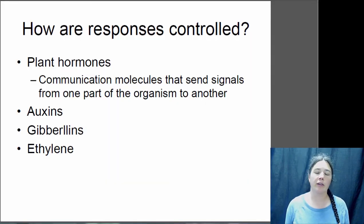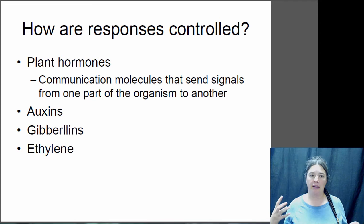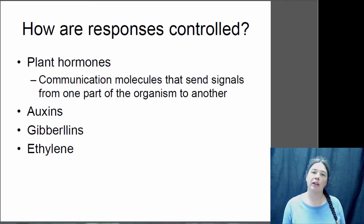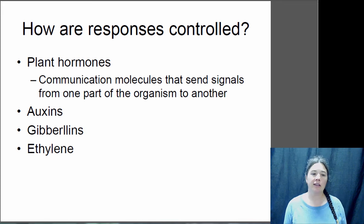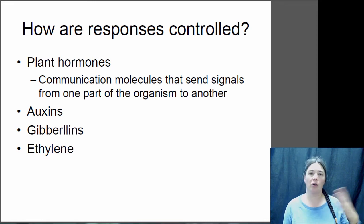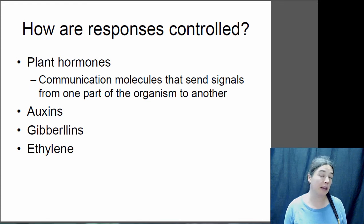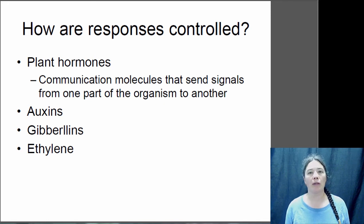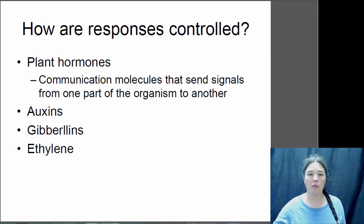How does the plant actually control these growth patterns? Plants have hormones, just like animals. Hormones are molecules that send signals from one part of an organism to another - we have testosterone and corticosterone, for example. Plants also have hormones, but they're different from animal hormones. I'm going to talk about three: auxins, gibberellins, and ethylene.